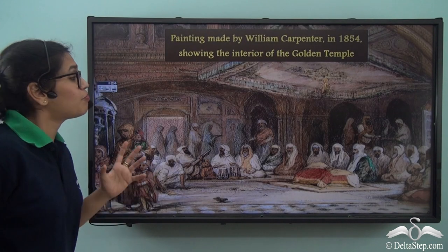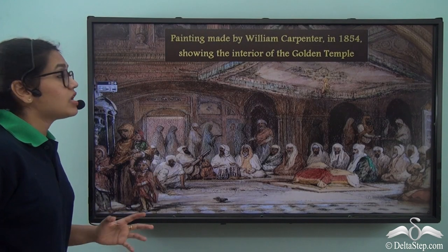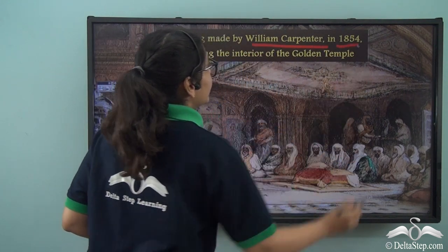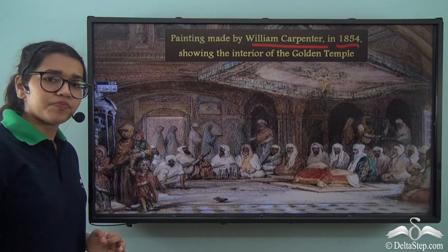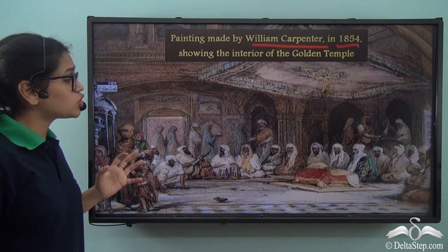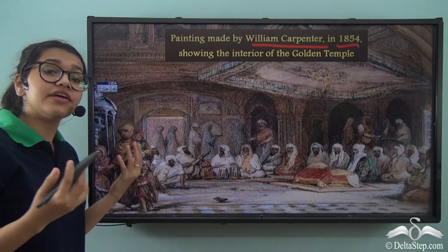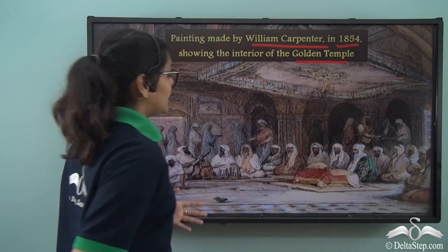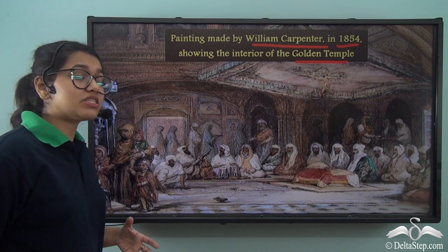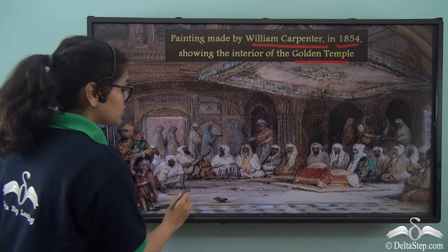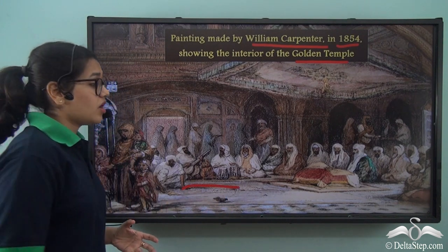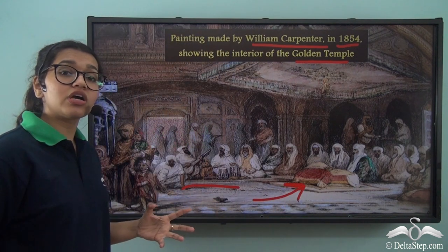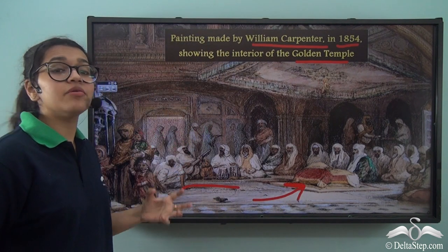Now let's take a look at this painting here. This painting was made by William Carpenter in 1854. It shows us the interior of the Golden Temple. As you can see, many people are playing musical instruments, and a book is kept on a red cushion. This book is in fact very important.